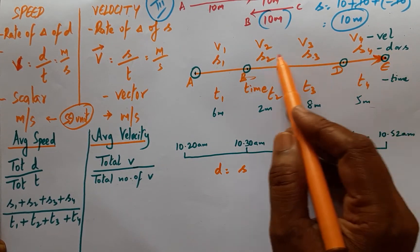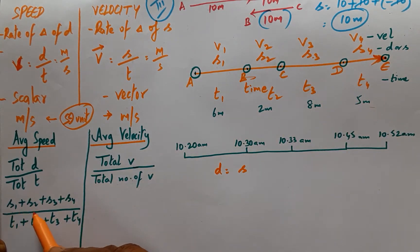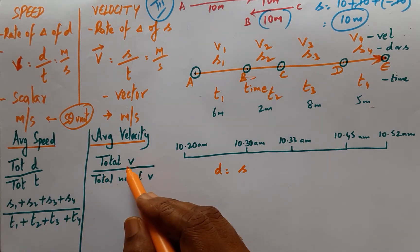Which can also be written as D1, D2, D3, D4, is nothing but S1 to S4 sum divided by T1 to T4 sum.